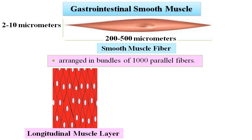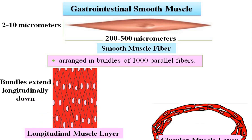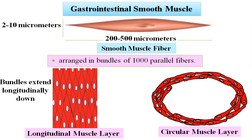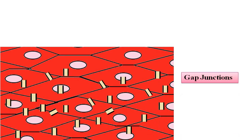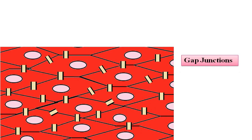In the longitudinal muscle layer, bundles extend longitudinally down, while in the circular muscle layer, they extend circularly around the gut. Within each bundle, muscle fibers are connected by channels called gap junctions.